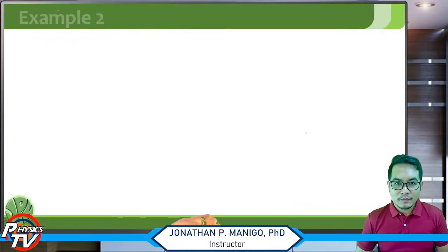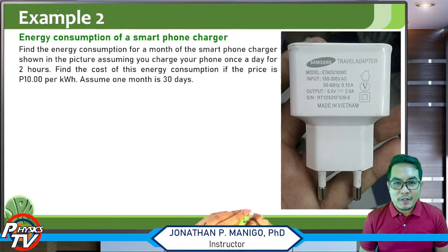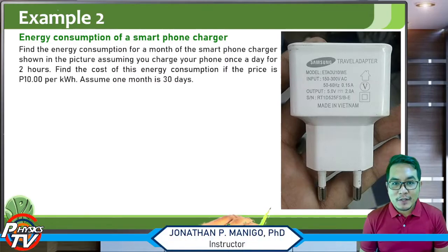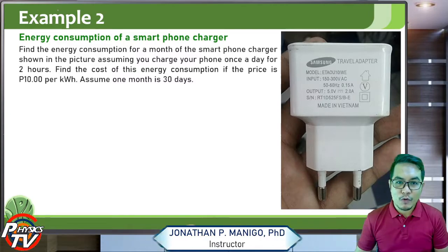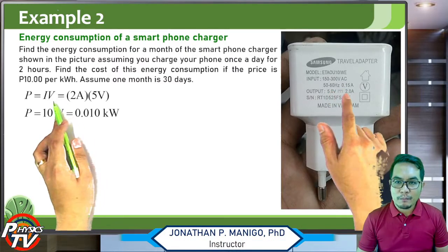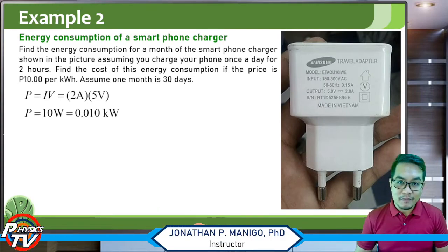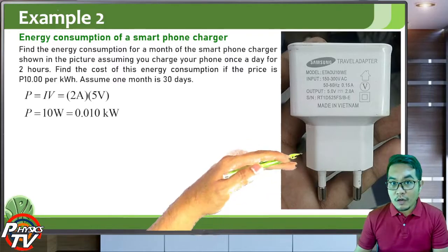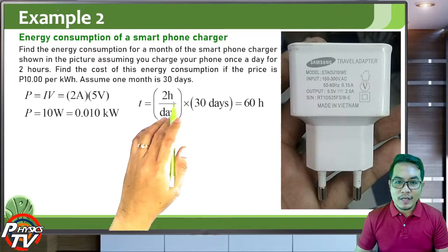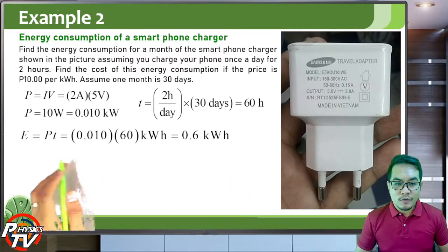Next example: energy consumption of a smartphone charger. Find the energy consumption for one month of the smartphone charger shown, assuming you charge your phone once a day for two hours, and find the cost at 10 pesos per kilowatt-hour over 30 days. The power is current times voltage: 2 amperes times 5 volts equals 10 watts or 0.01 kilowatts — the same as the LED bulb. But it is used only 2 hours per day, so time is 2 hours times 30 days equals 60 hours.